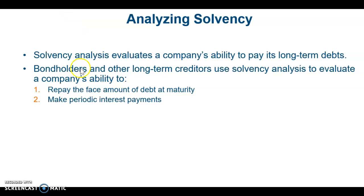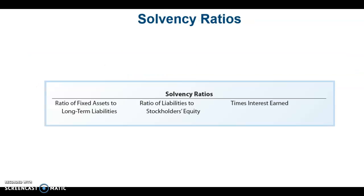Now we're going to look at solvency ratios — the ability to pay long-term debts. Long-term creditors and bondholders want to look at these ratios to see if a company can repay the face amount of a bond or debt at maturity and whether it can make periodic interest payments. We'll cover the ratio of fixed assets to long-term liabilities, ratio of liabilities to stockholders' equity, and times interest earned.